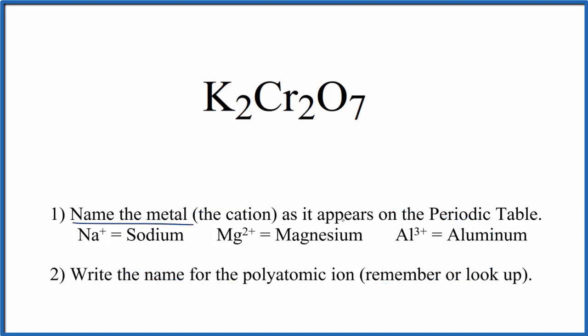First, we write the name for the metal as it appears on the periodic table. K, that's potassium.